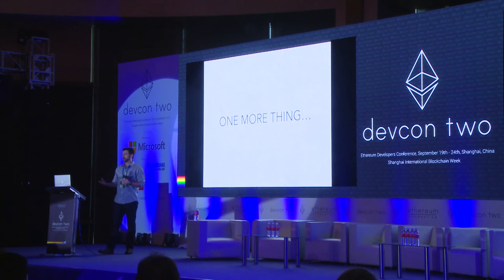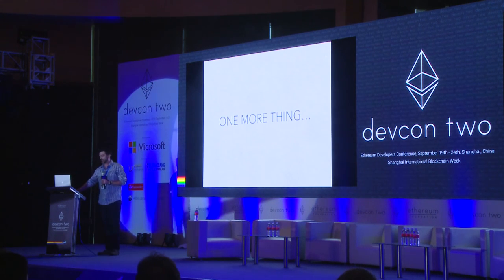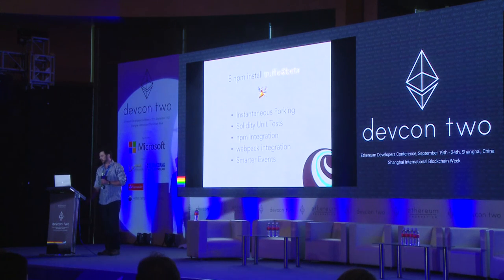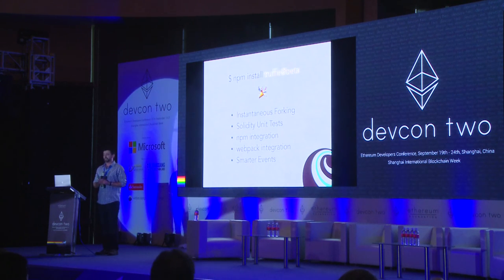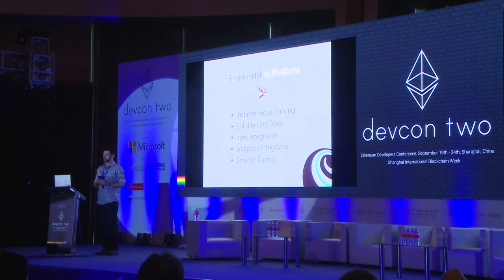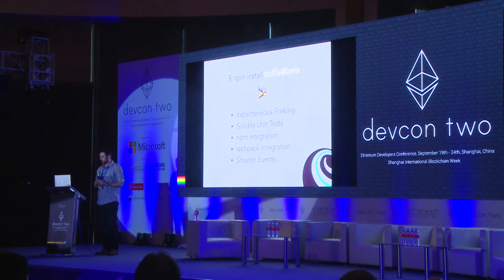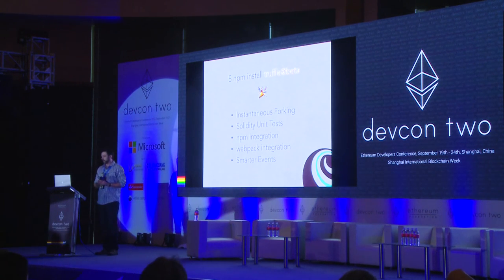One more thing — there's always one more thing. Everything I mentioned today is currently in beta, so you can go use it today. NPM install truffle at beta, use the beta tag. Instantaneous forking — that's the fork feature from the TestRPC — is already live: NPM install EthereumJS TestRPC. You can try out the Solidity unit tests, try out package management with NPM, use Webpack, and have those smarter events that I mentioned.